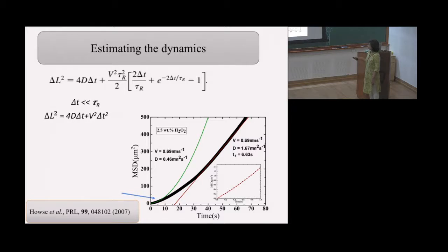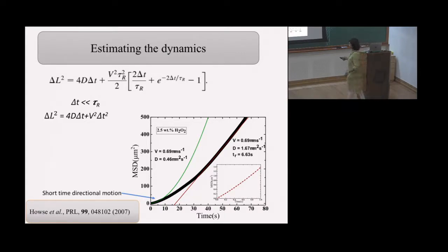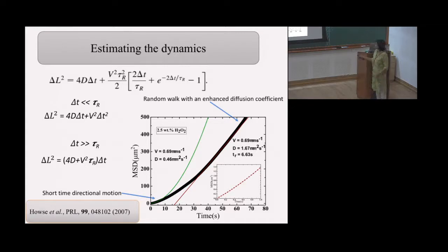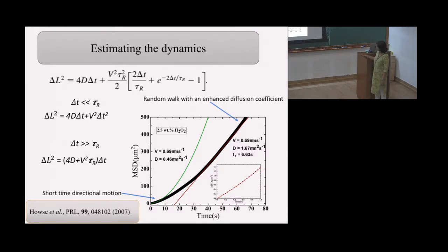In the very short time limit you do get ballistic behavior, though the range of fitting is limited — an experimental difficulty because we cannot achieve very high frame rates. At longer timescales, you do get diffusive motion back, except that the diffusion coefficient is now an enhanced effective value. The fit for short timescales is shown here.